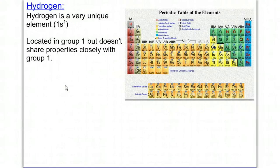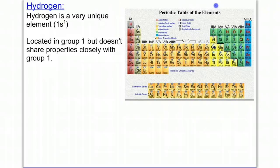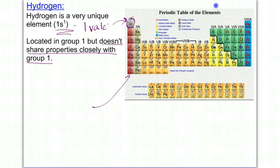We'll start with hydrogen. Hydrogen is a very unique element because it has a 1s1 configuration, which gives it one valence electron. It's located in group 1 because it has one valence electron. However, it does not share properties closely with that group because every other element in that group is considered a metal, and hydrogen being a gas is not a metal. It's in that group simply because of its valence electron configuration.